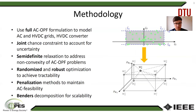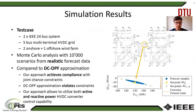We propose penalization methods to maintain AC feasibility of the solutions to the convex relaxation, and we use Bender's decomposition for scalability. For the simulation results, we consider a test case consisting of two IEEE 24-bus systems interconnected with a five-bus multi-terminal HVDC grid. This system has two onshore and one offshore wind farm, which are the sources of uncertainty. We perform a Monte Carlo analysis with 10,000 scenarios from realistic wind forecast data.